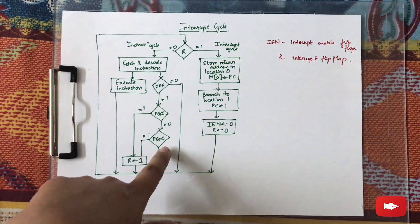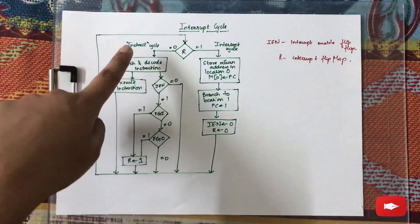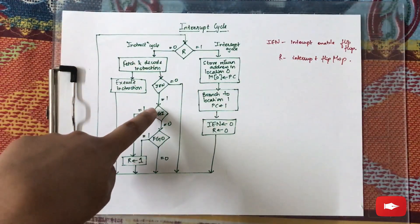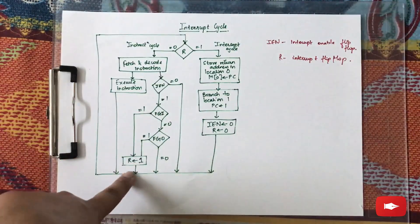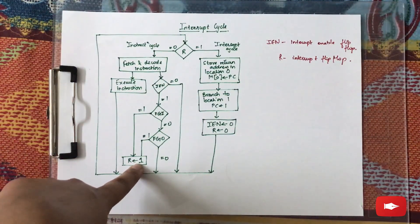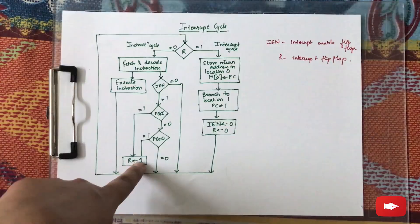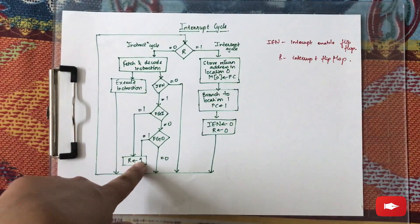But if any one of these gets the value one, R is set to one. That means an interrupt is there, and the interrupt cycle needs to be executed.